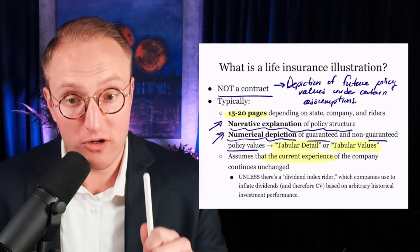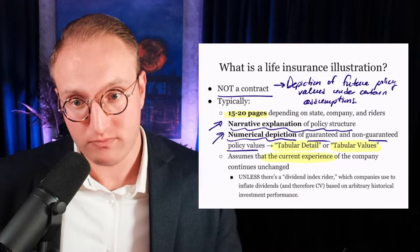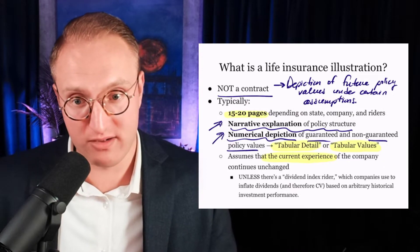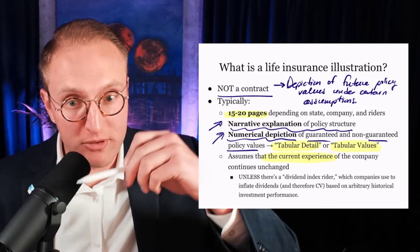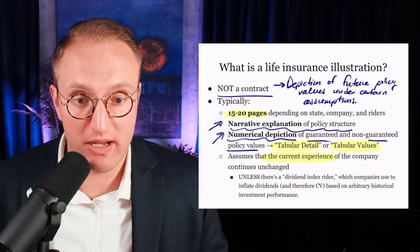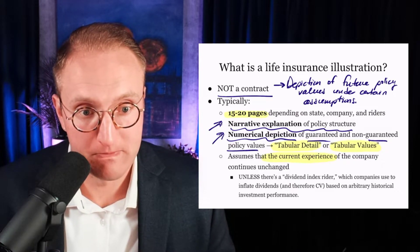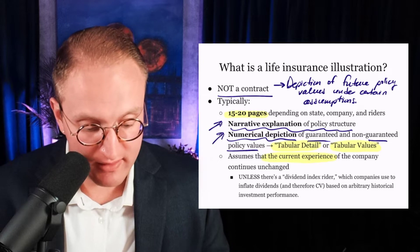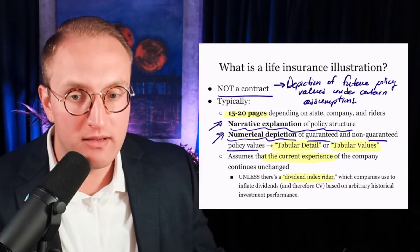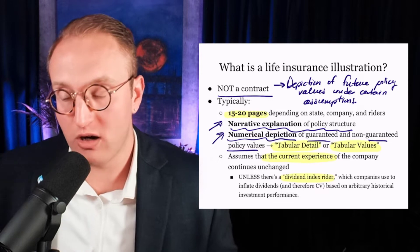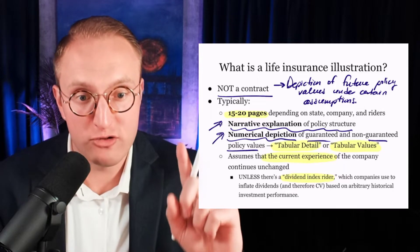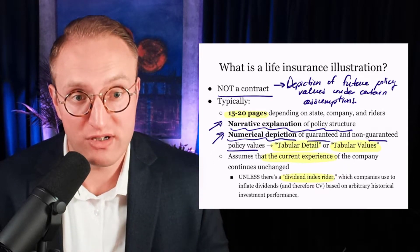Notice the difference: assuming the current experience of the company versus, in the case of an investment projection, selecting a performance metric based on some historical rate of return and projecting numbers into the future based on that. That is not allowed in illustration of dividend-paying whole life insurance. Now, I've mentioned these index dividend riders — this might be the one exception where a whole life insurance company can sneak in through the back door and smuggle in assumptions regarding historical performance. There might even be a case to be made that if an illustration assumes dividends are inflated, we're not looking at an illustration — we're looking at a projection.